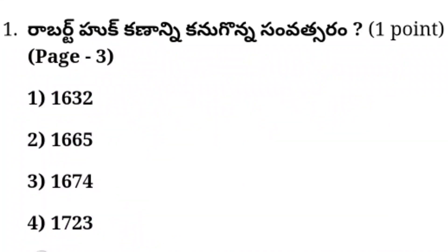First question: Robert Hook's birth year. Option 1: 1632. Option 2: 1665. Option 3: 1674. Option 4: 1723. Answer in the comment box.